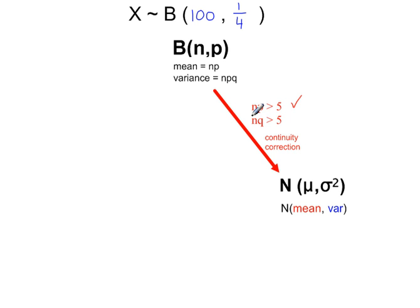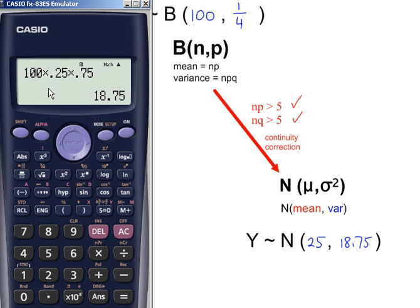n times q, q is the probability of failure, so q is 3 quarters, so 100 times 3 quarters is 75, so this condition is also met. The mean of the binomial distribution is 25, and the variance of the binomial distribution, n times p times 1 minus p, is 18.75.